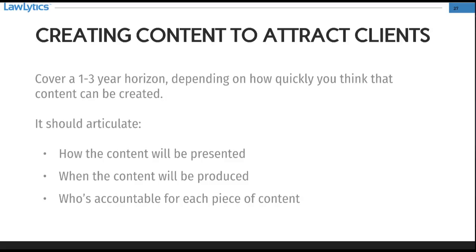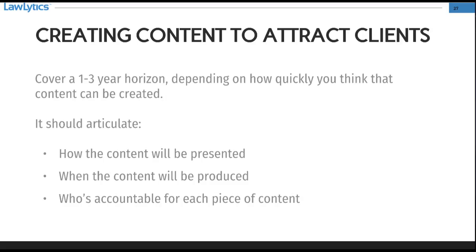The content plan should look out one to three years, depending on how fast you think you can get content created and what resources you have available. It should articulate how content is going to be presented, include a rough schedule of when content will be produced and published, and assign who is accountable for each piece of content — even if you're the only one creating it. Whether you have a law clerk writing content, outsource it to a company like Lawlytics, or have someone else in your firm do it and then it comes back to you for editorial revisions, make sure the plan articulates who's going to do what and when.